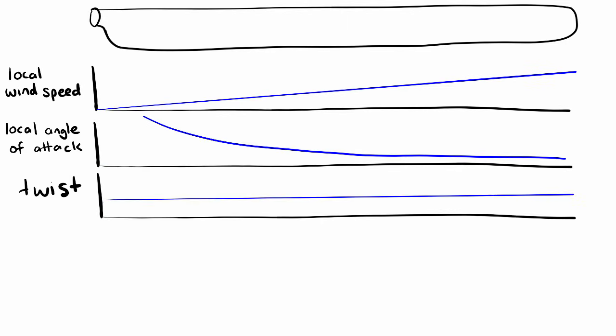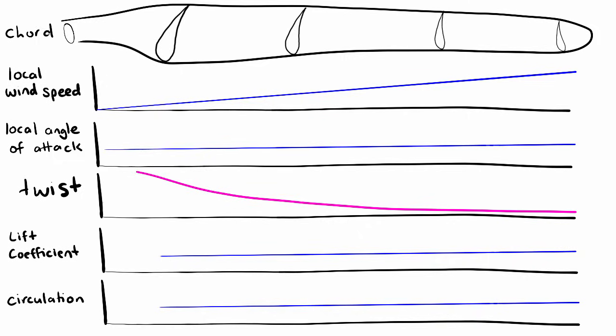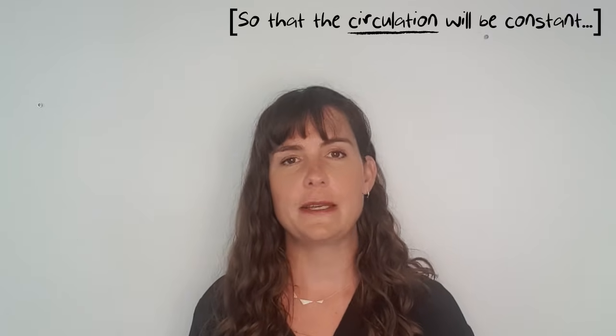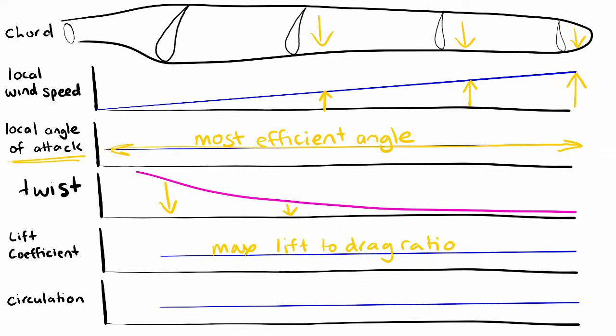Because the local wind speed and the angle vary along the length of the blade, a straight rectangular blade will not give constant lift along its length. So the geometry of a wind turbine blade needs to be changed to achieve a more constant lift distribution. If you assume a single aerofoil for the whole blade, then to get an optimized blade you need to change the chord and twist angle along the blade's span. The chord needs to decrease as the local wind speed increases along the span, and the twist angle needs to change so that you keep the profiles operating at the most efficient angle — the angle of maximum lift-to-drag ratio.